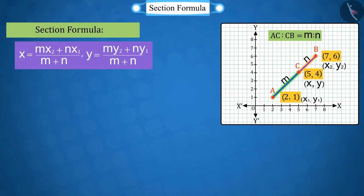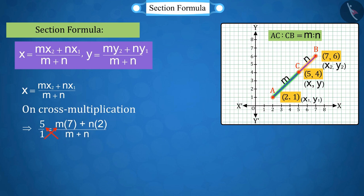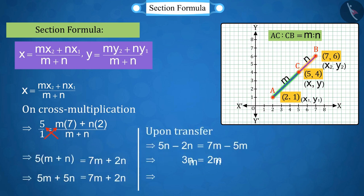In this case, in the section formula's point x, by placing all the values, the values of M ratio N can be determined. Where x equals 5, x1 equals 2, and x2 equals 7. On solving which, we get M upon N equal to 3 upon 2.